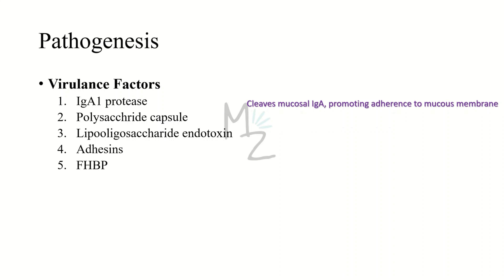The second — and really high-yield — virulence factor is the polysaccharide capsule. It is antiphagocytic, enabling the organism to resist phagocytosis by polymorphonuclear leukocytes like neutrophils or macrophages. This capsule is an immunogen and is used in certain vaccines against Neisseria meningitidis.